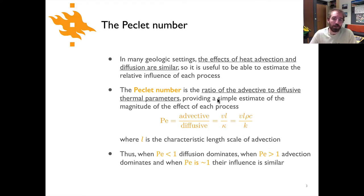The Peclet number is simply the ratio of advective to diffusive thermal parameters. You could think about it as a ratio of the terms related to heat advection versus terms related to heat diffusion. This gives us a way of simply estimating the influence of those processes.